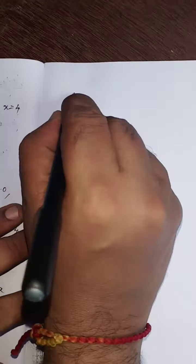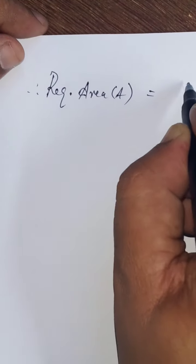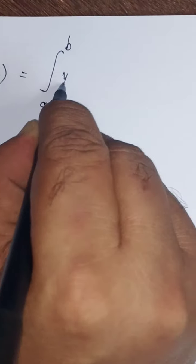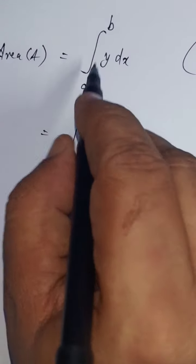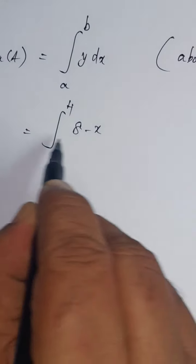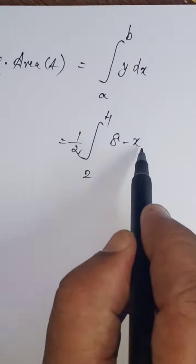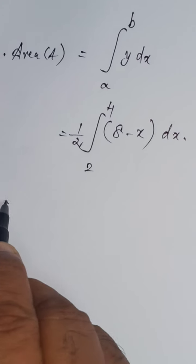Since the shaded region lies above the x-axis, the required area equals integral from a to b of y dx. Here the lower limit a is 2 and upper limit b is 4, so the area equals the integral from 2 to 4 of (8 minus x) divided by 2 dx, which can be written as one-half times the integral from 2 to 4 of (8 minus x) dx.